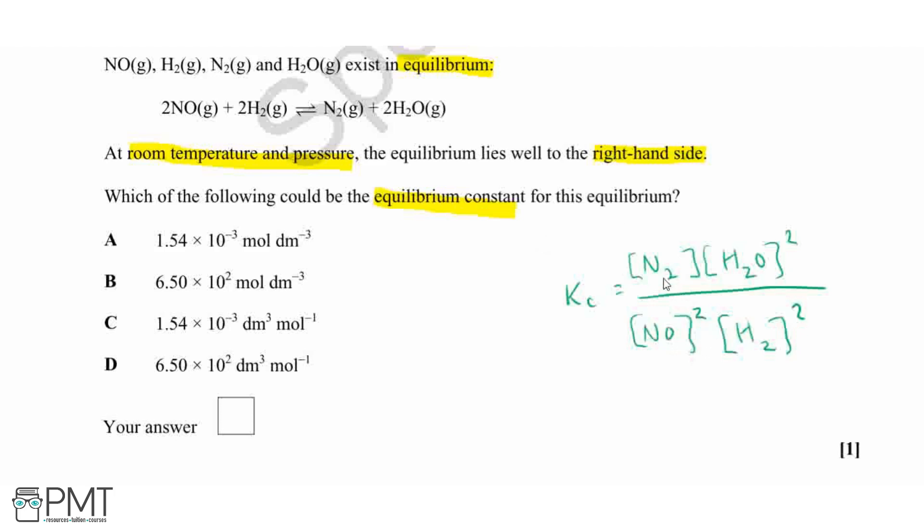Now, if our equilibrium constant was roughly in the middle, then that would mean that we've got equal quantities on the top and on the bottom of our equation, which means that we will get a value close to 1. So that is if it is equal.